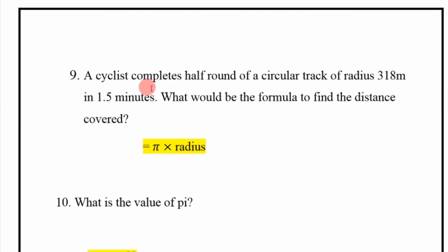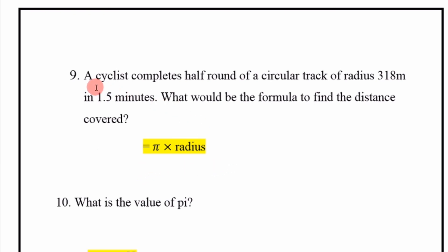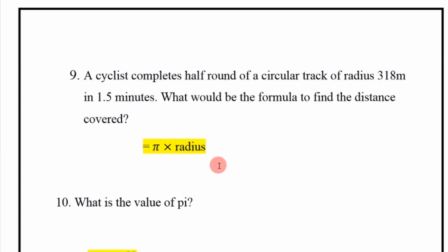A cyclist completes half a round of a circular track of radius 318 meters in 1.5 minutes. What would be the formula to find the distance covered? Pi multiplied by radius.